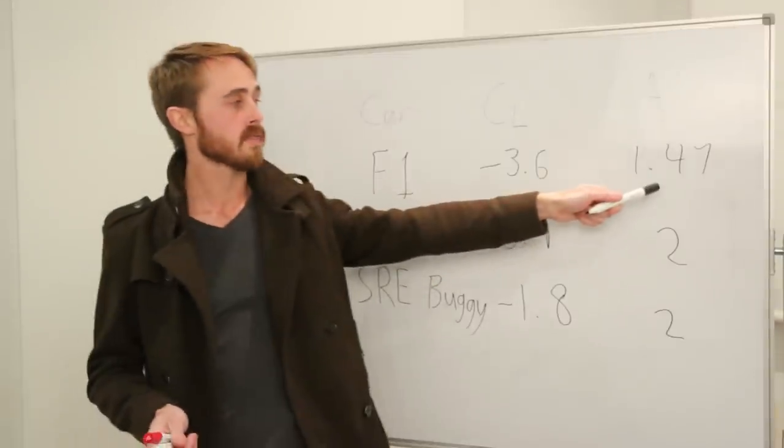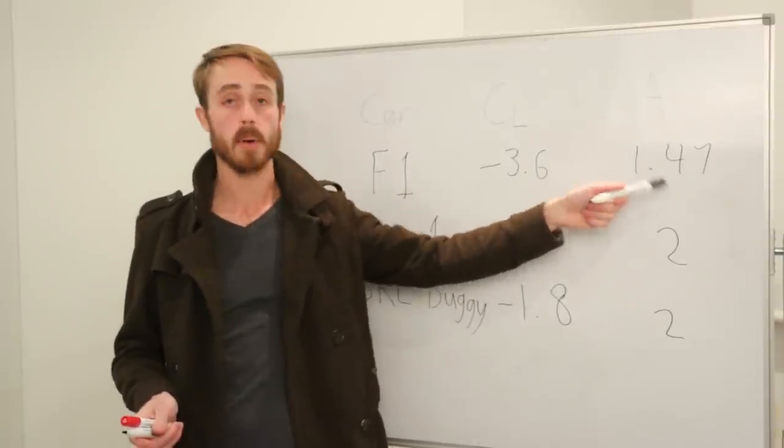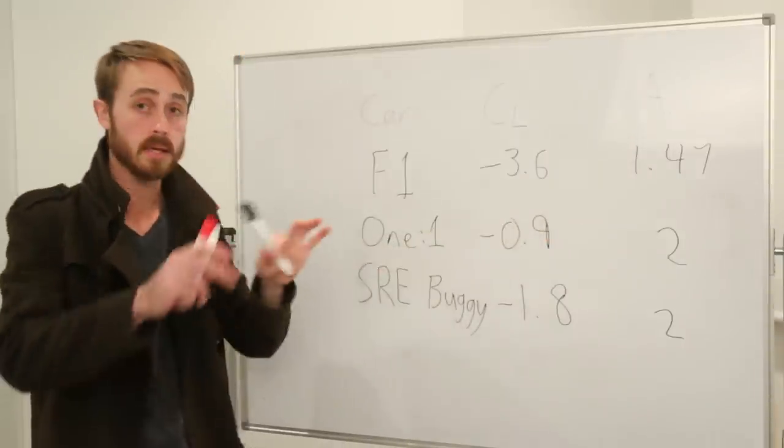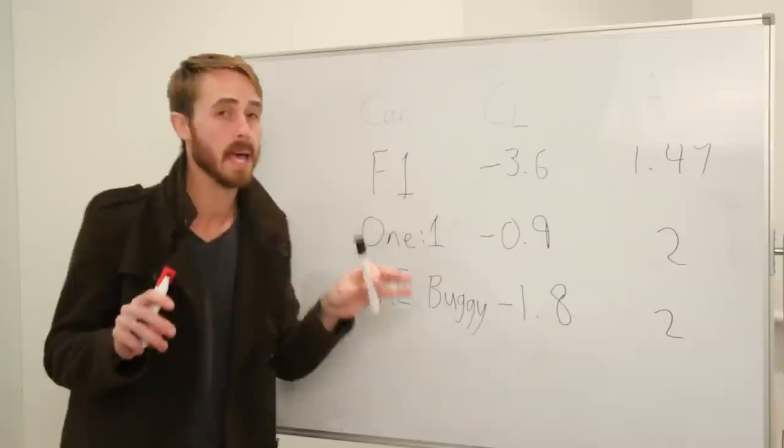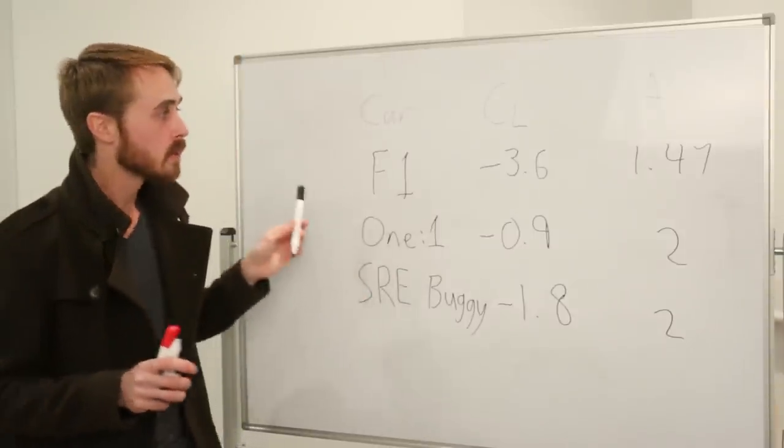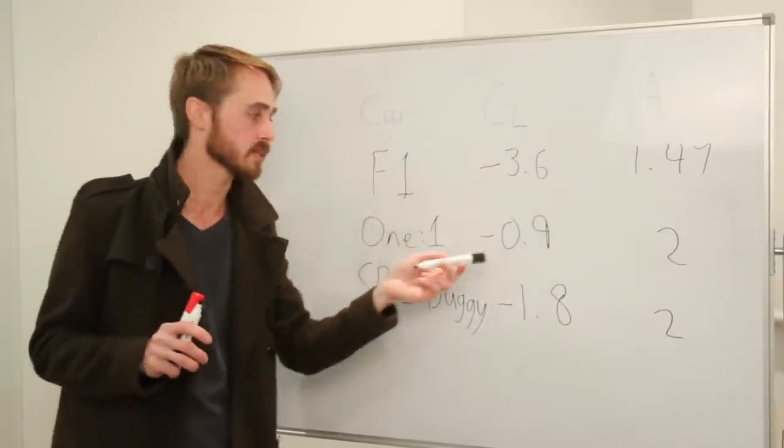Formula One cars generally evaluate off a common area of about 1.47 meters squared. That's the frontal area. On this they have a CL of around negative 3.6 and that is quite a lot of downforce.